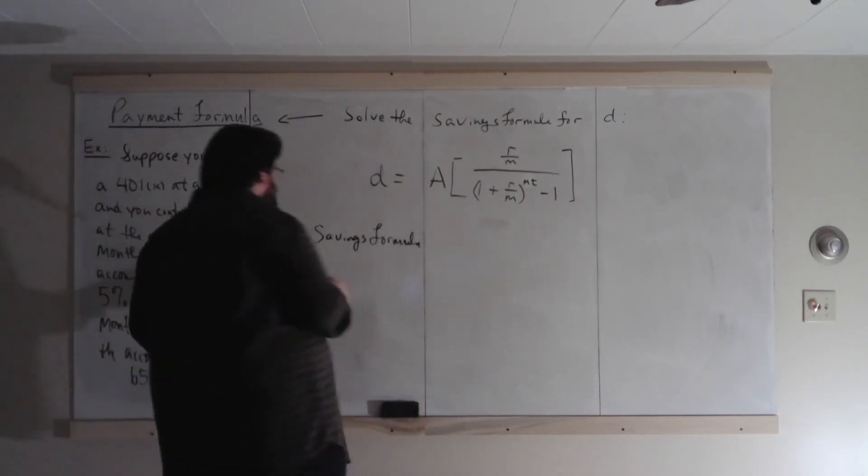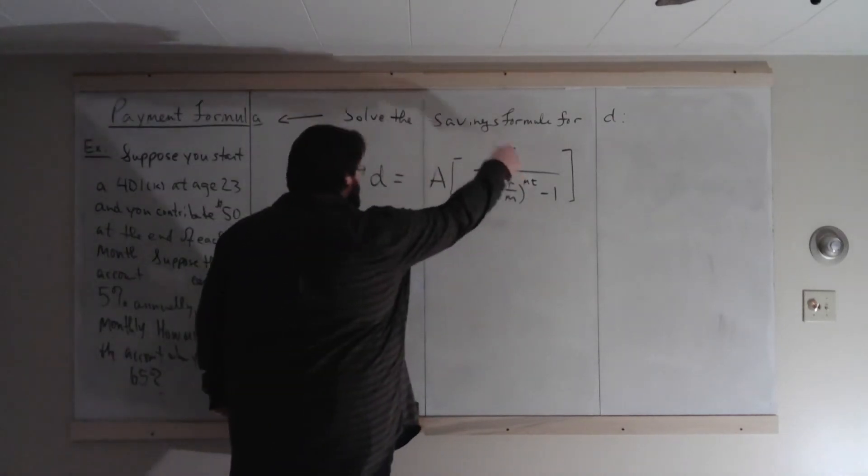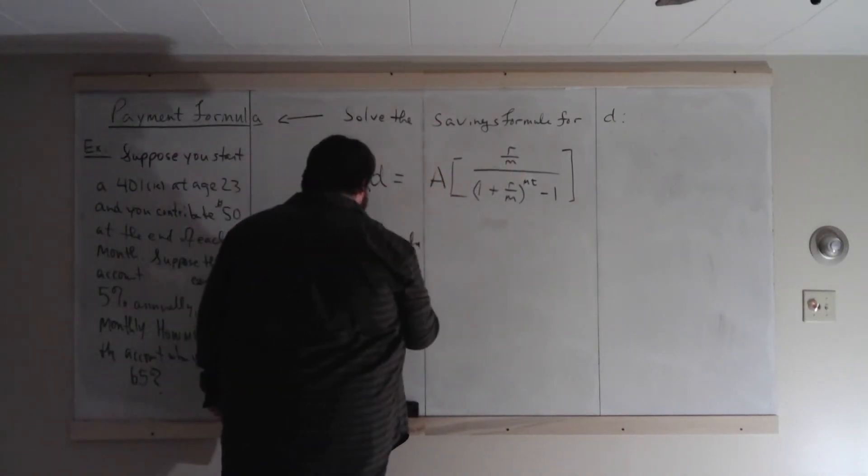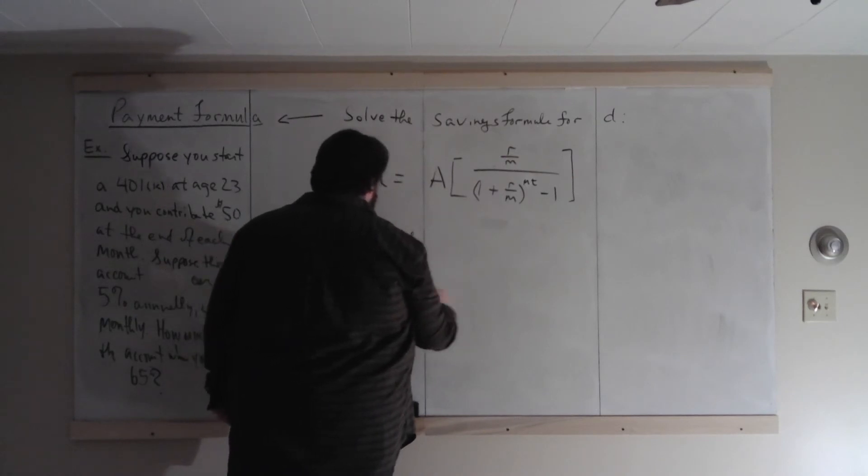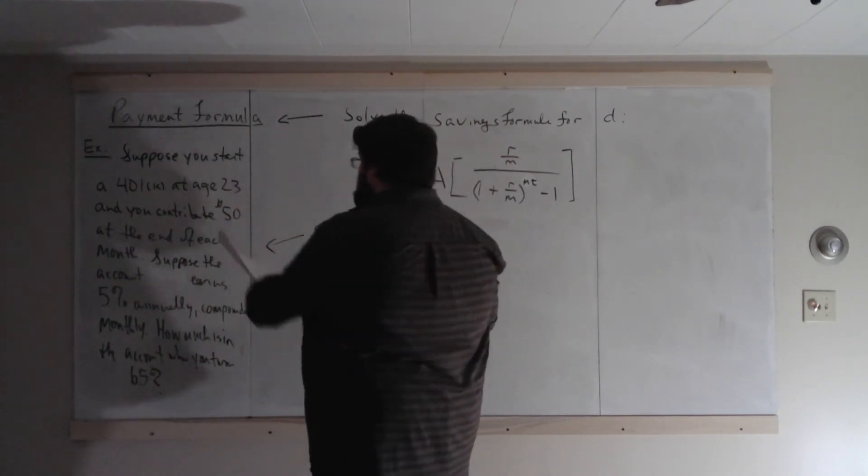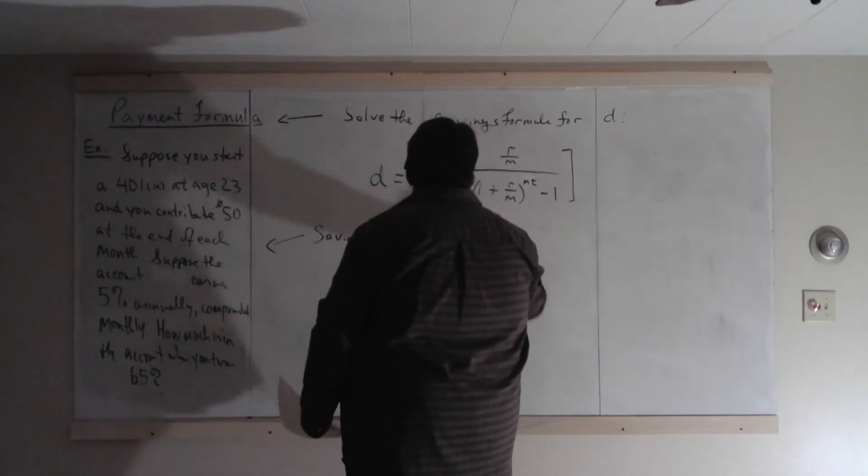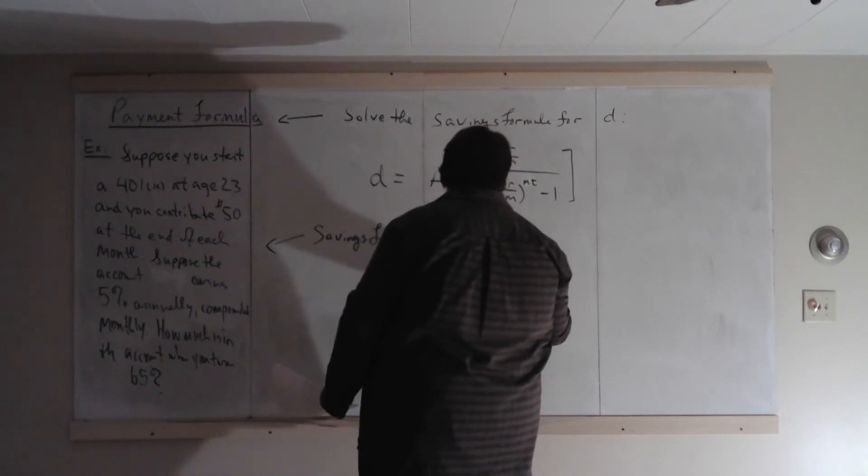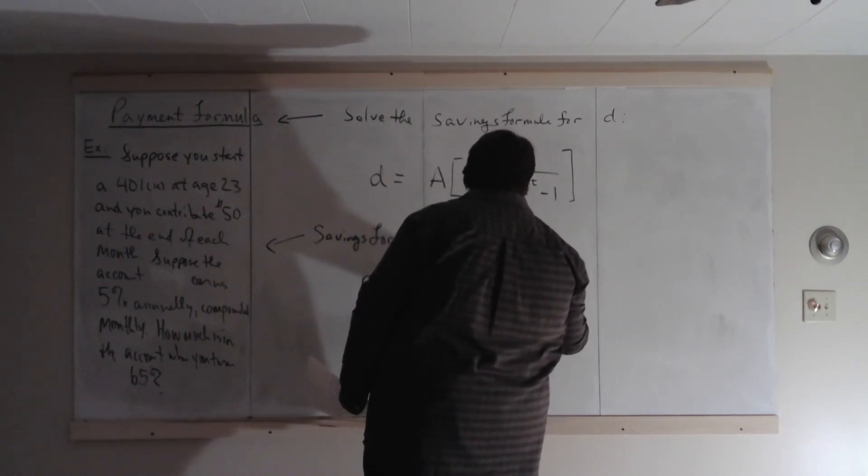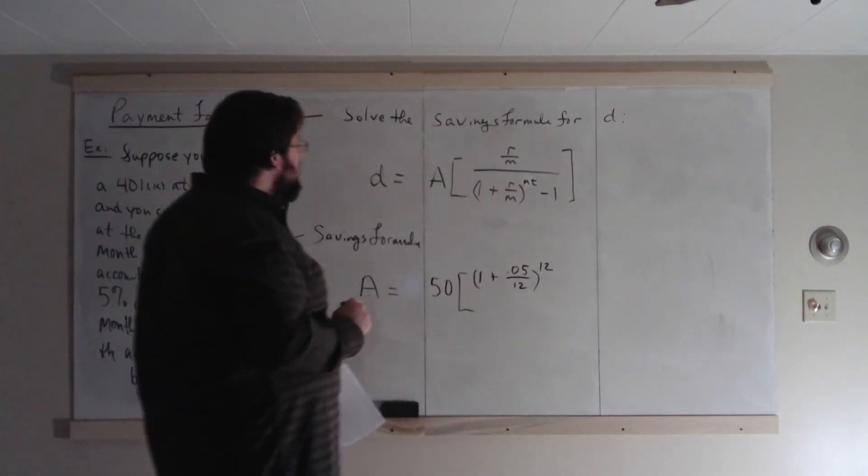We're looking for how much a savings has grown to. And that is, of course, this, flipped around, times D, solve for A. So A equals, what's D, $50, times what? 1 plus the rate, 5%, divided by the compounding period, which is 12. So raised to the 12 times T. What is T here?